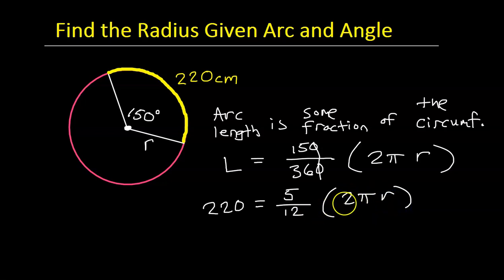And then we have the 2πr. I can further simplify this because the 2 and the 12, you can cancel these out. 2 goes into 12 six times. So that's going to give us 220 equals 5 over 6. That's not my best 5 ever, but 5 over 6. And I'm just going to go ahead and put πr right now.